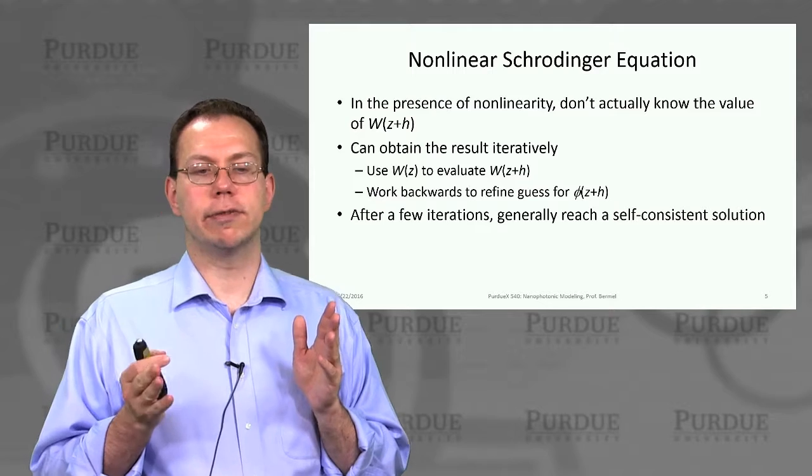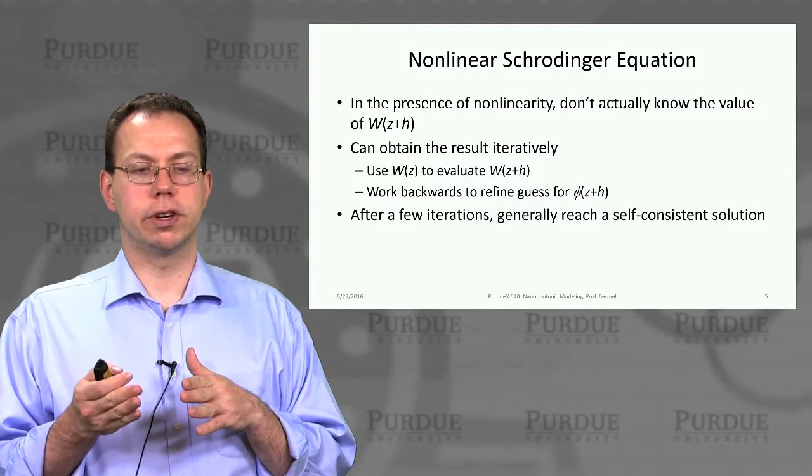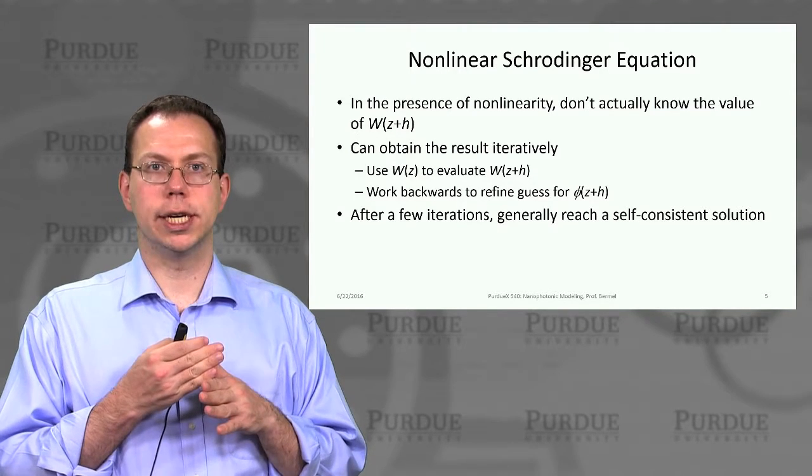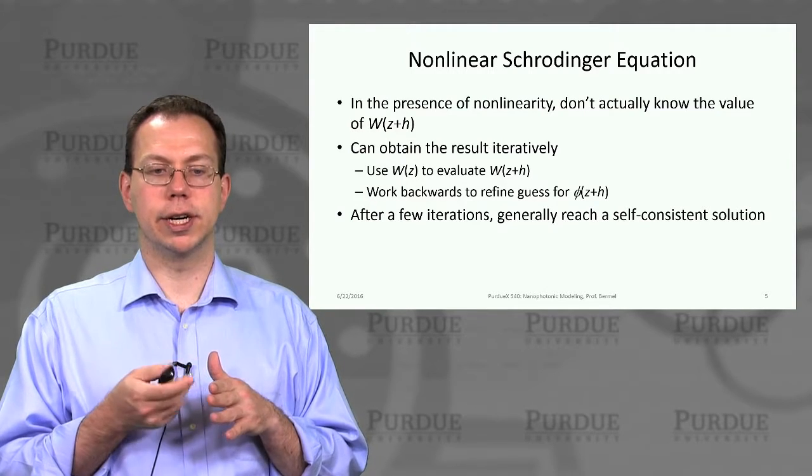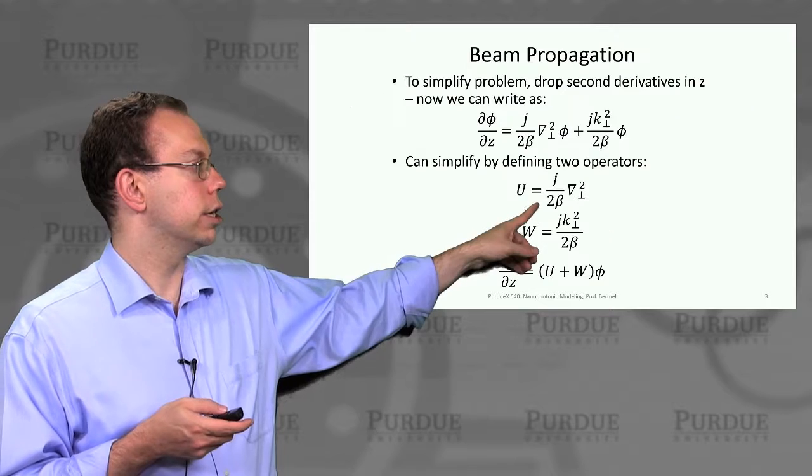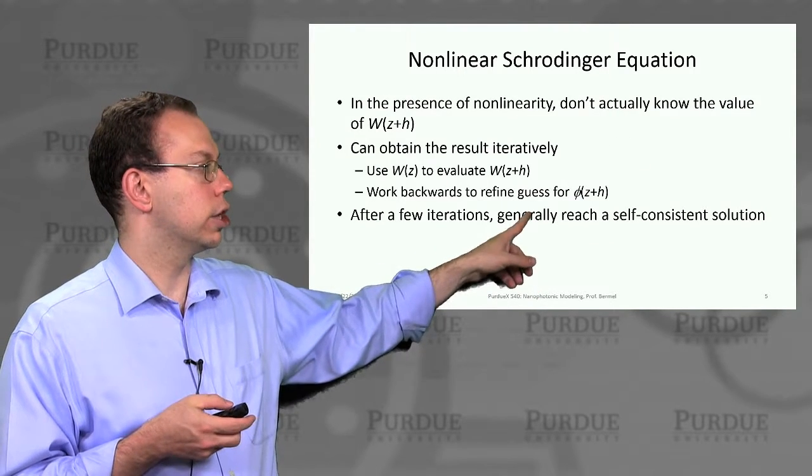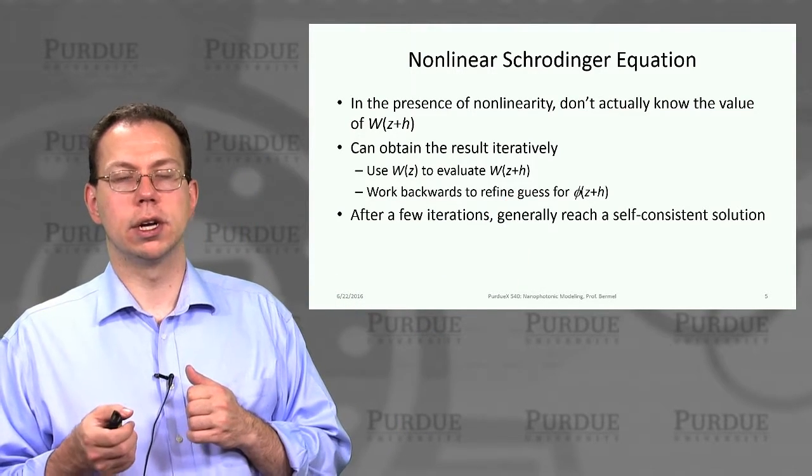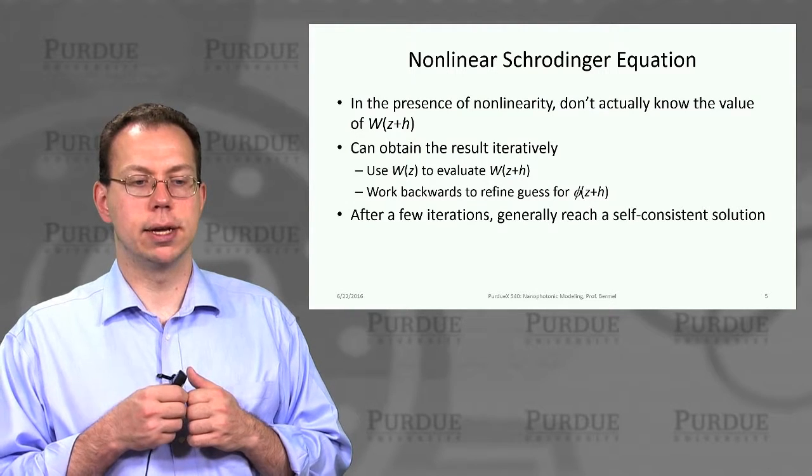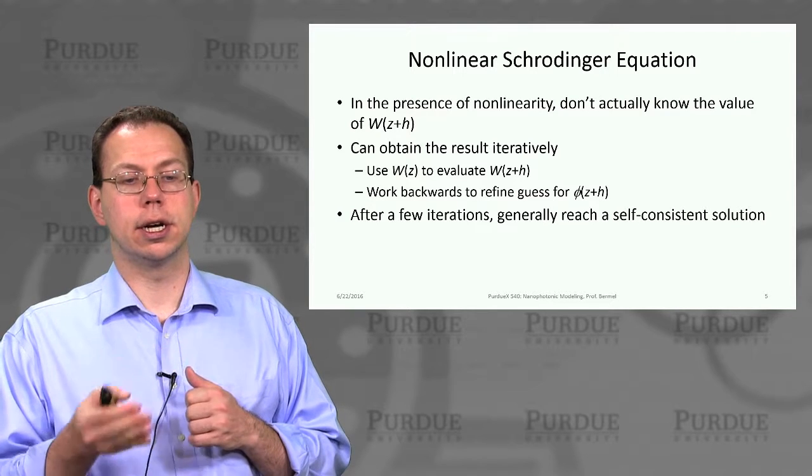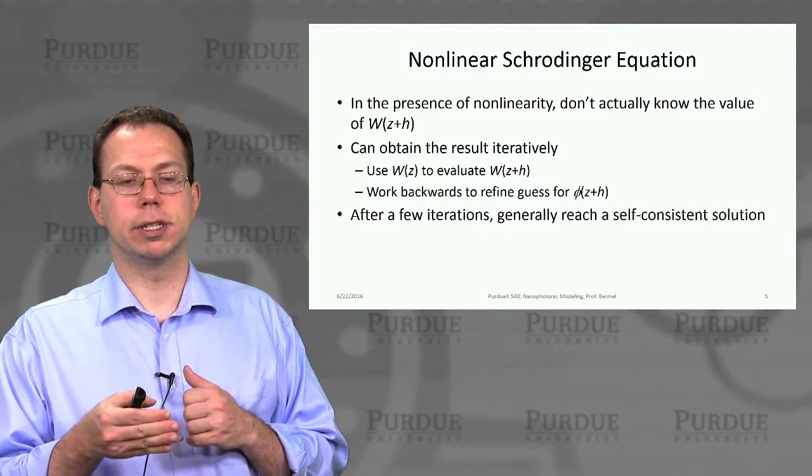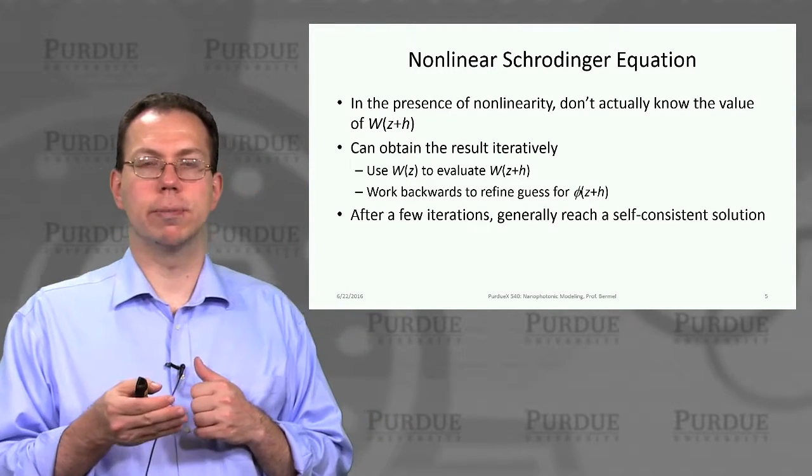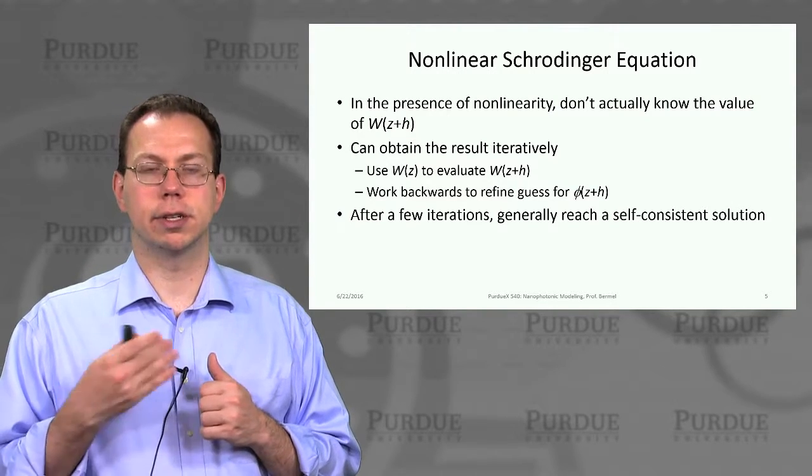The challenge is we don't actually know the value of W as it's propagated upfront. All we can do is evaluate W, whatever that W is, at our current position. We can use that to get an inference for what W of z plus h after propagation would be. Then we can work backwards to refine our subsequent envelope function at the new position phi of z plus h. If you work forward and backwards multiple times and iterate, you can create at least a self-consistent solution.